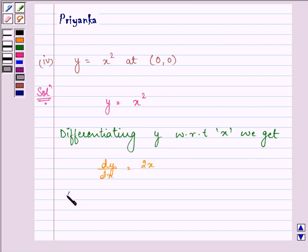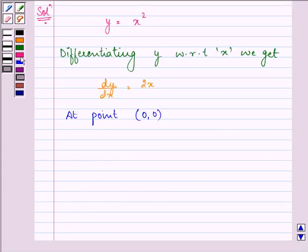Now the indicated point which was given to us is 0, 0. So the value of dy by dx at this point will be 2 into 0 which is equal to 0.